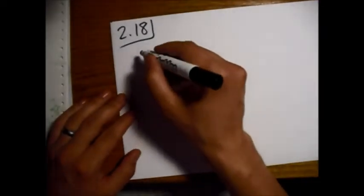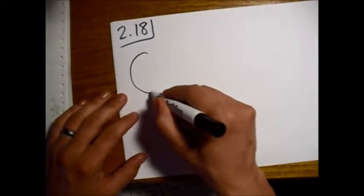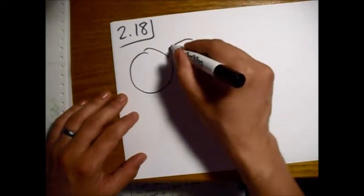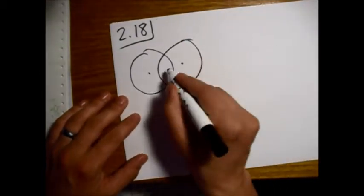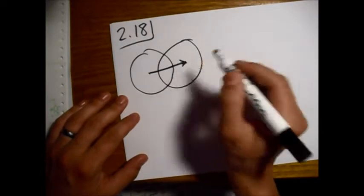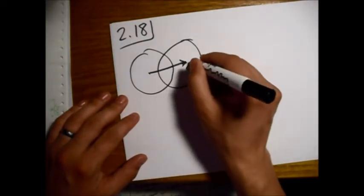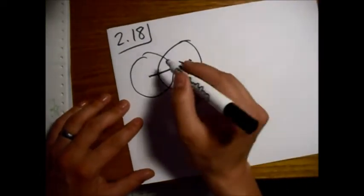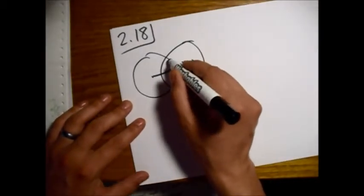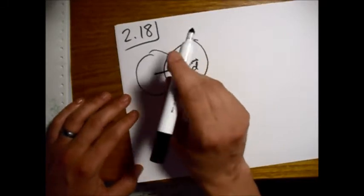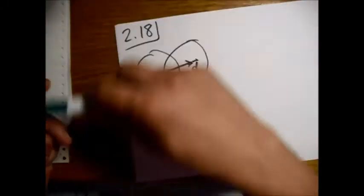We have two different spheres that are displaced by a vector that we call d, and our job is to find the electric field just in this region right here.